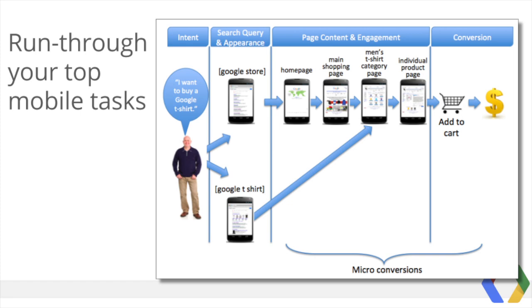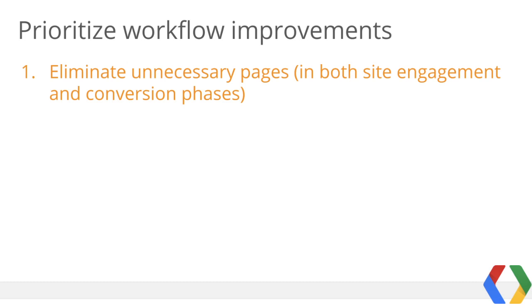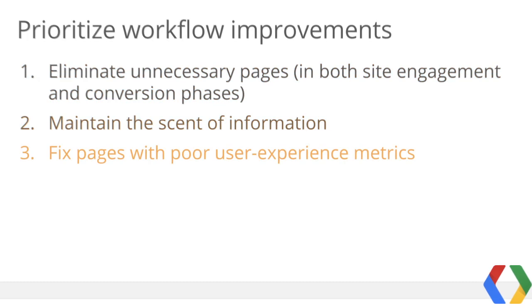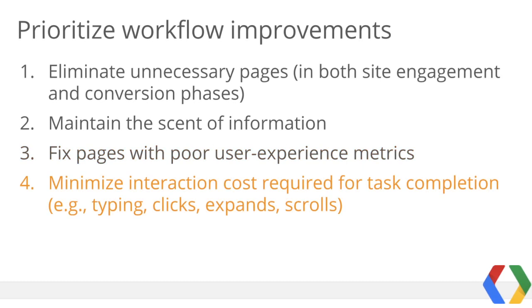By the end, Tom has both completed his task and helped our business. Most real users' workflow has many more twists and turns than this — still, it's useful to put yourself in your users' shoes to get a sense of what it takes for task completion. To prioritize improvements in the workflow: first, eliminate any unnecessary pages and check for extraneous steps that can be merged or removed in both the site engagement and conversion stage. Second, maintain information sent. Third, fix the remaining pages in the workflow that show poor user experience metrics.